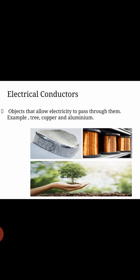Electrical conductors are objects that allow electricity to pass through them. Examples include copper and aluminum. Humans are also examples of conductors because water is a conductor and the human body contains 70 percent water — that is why humans are also considered conductors.